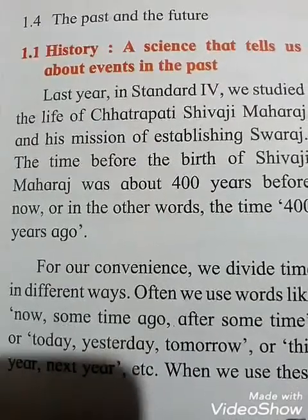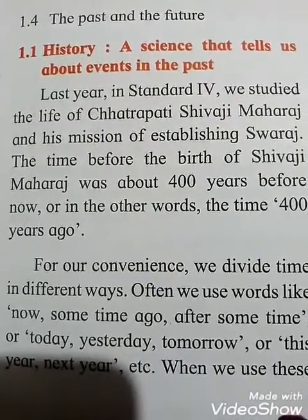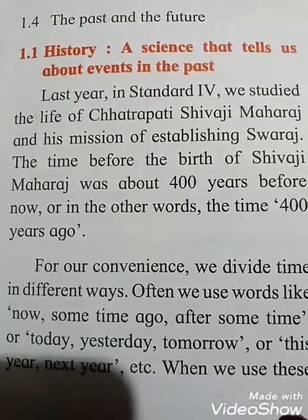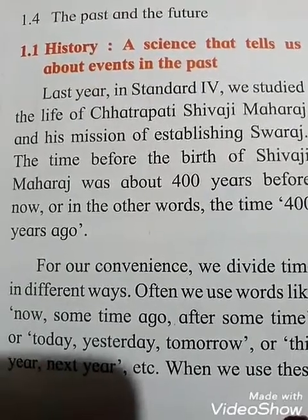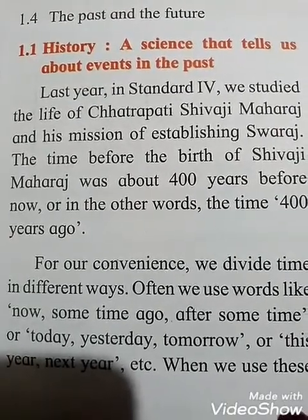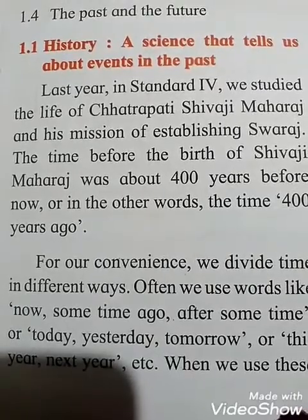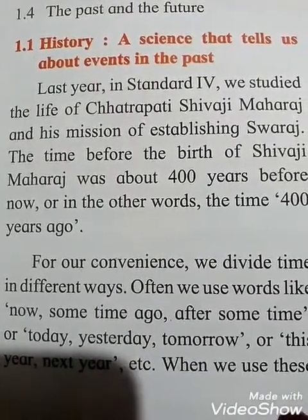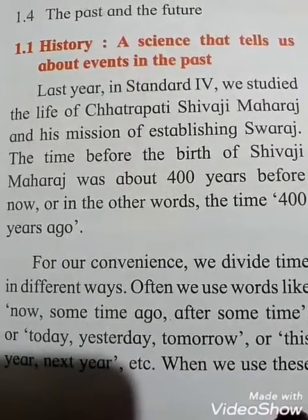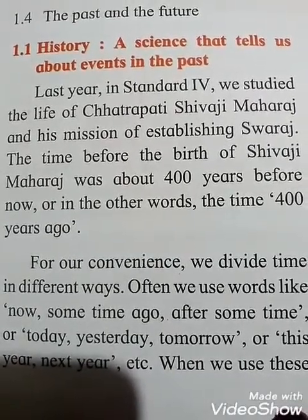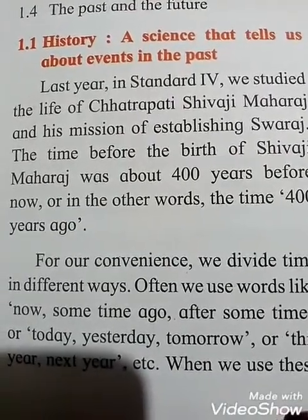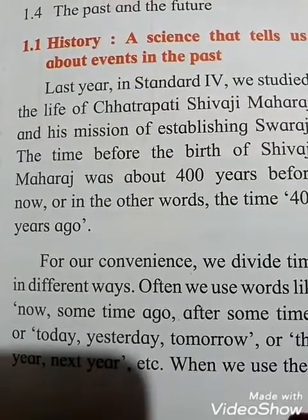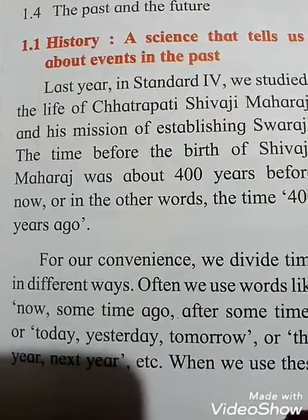Section 1.1 — History: a science that tells us about events in the past. The definition of history is: a science that tells us about events in the past. Whatever knowledge we are getting from the past, we can call that history.